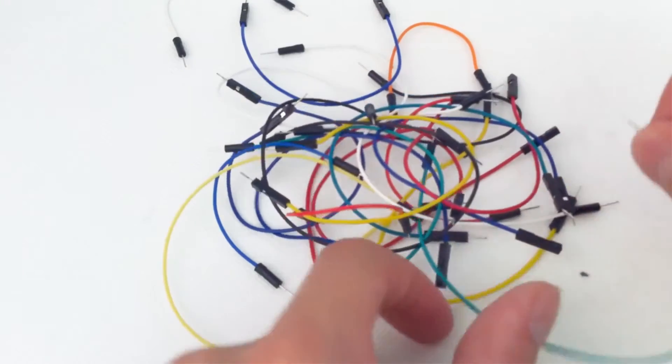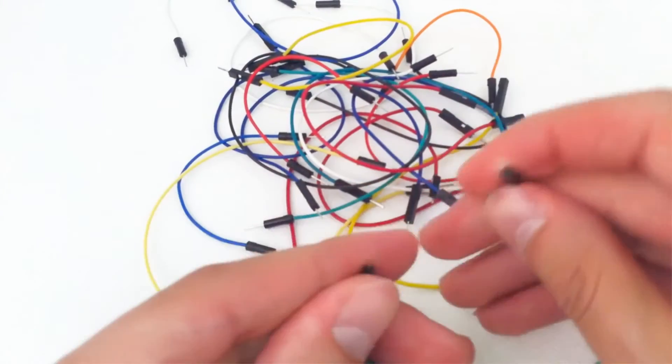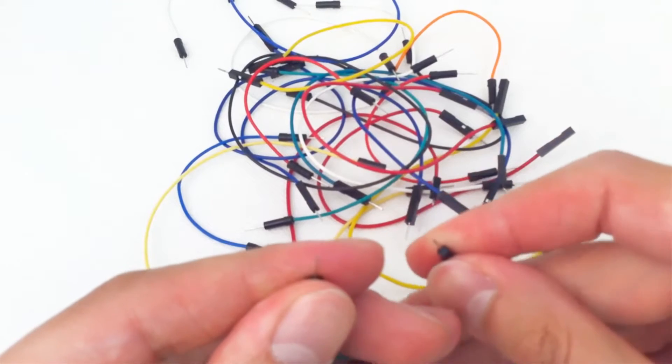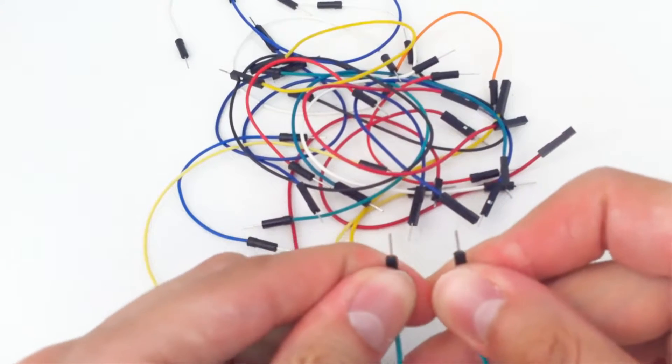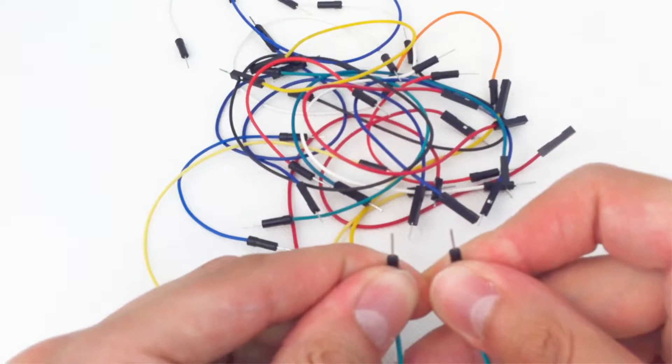If you can see these are male to male jumper wires so each point or each end has a pin to which we can connect two sets of holes.